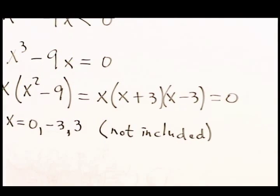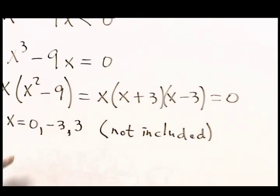These are the values that separate the good stuff from the bad stuff. And so what I'm going to do now is test each interval resulting.